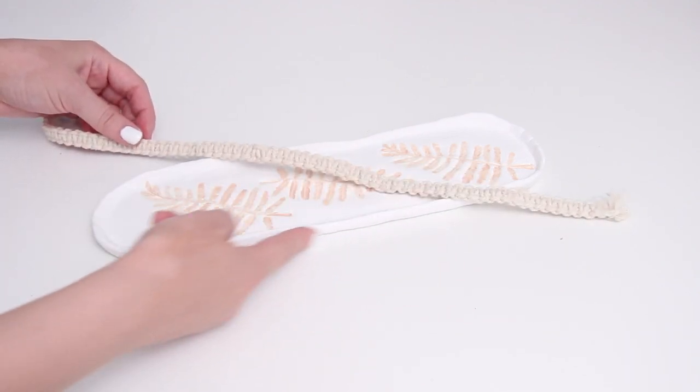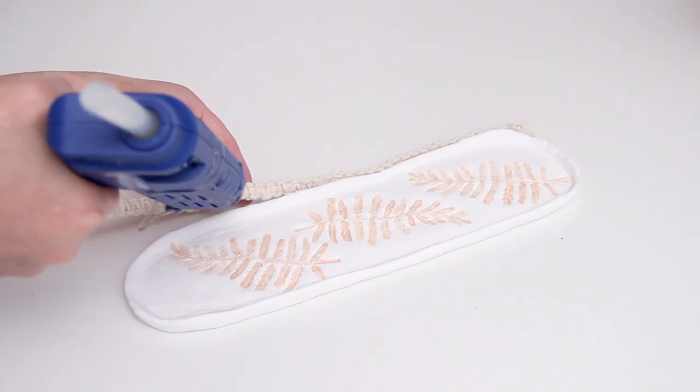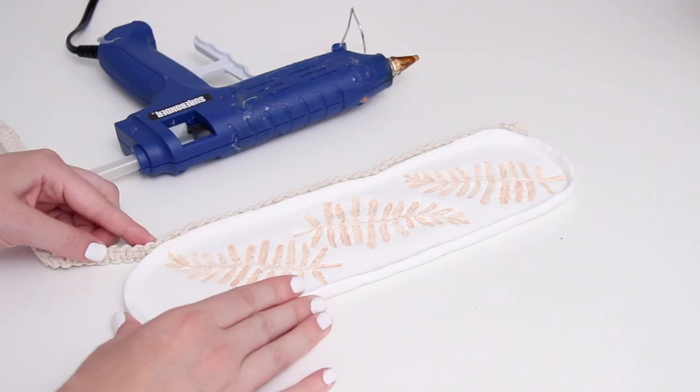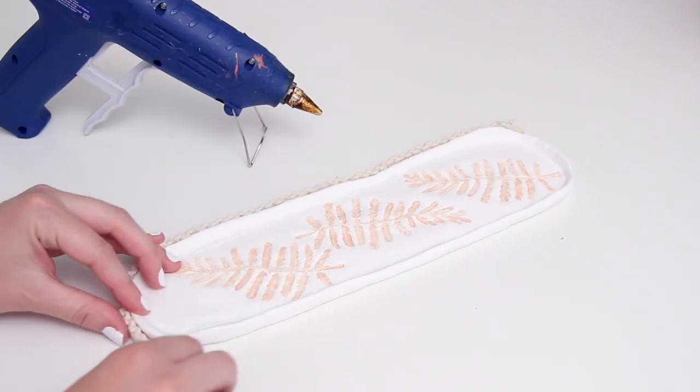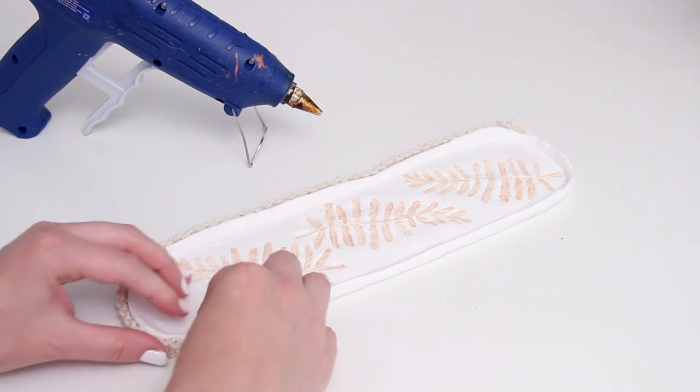So now I'm just going to take this and glue it along the outside edge of my tray. So just using a bit of hot glue, I glued this all around and pushed it in tight. And I think it adds a nice extra touch and gives it that sort of boho feel, which I love.